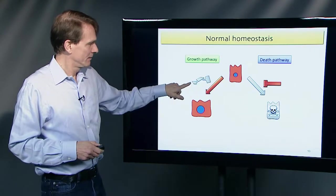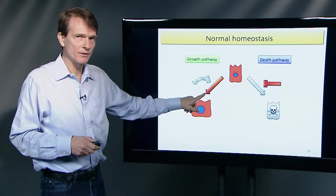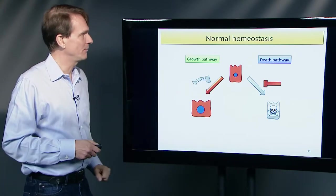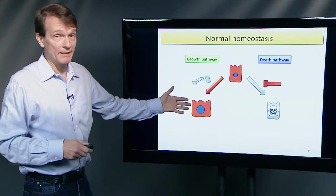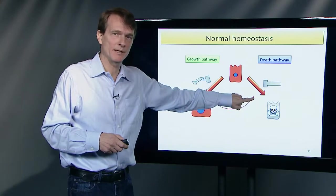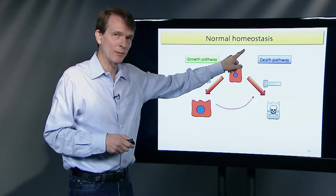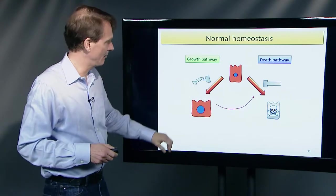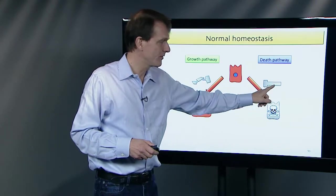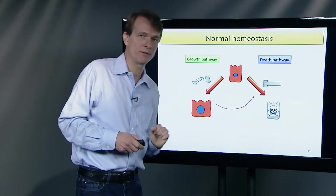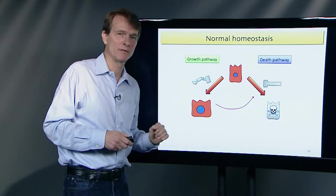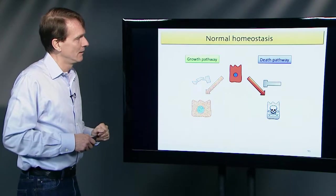If the growth pathway is disrupted — not by mutation but by an error in execution — the cell death pathway kicks in. The cell senses deregulation, relieves repression of the cell death pathway, turns it on, and the cell commits suicide. Cell death overrides cell division. That is the normal homeostatic safeguard.